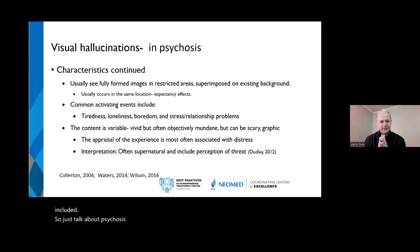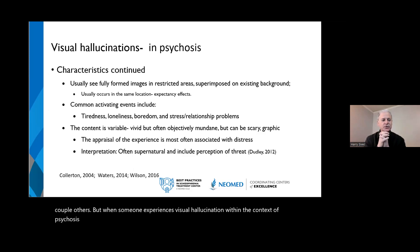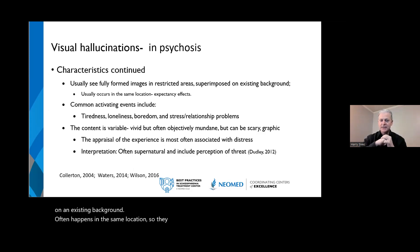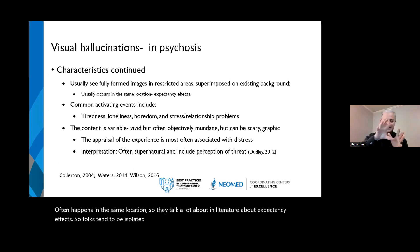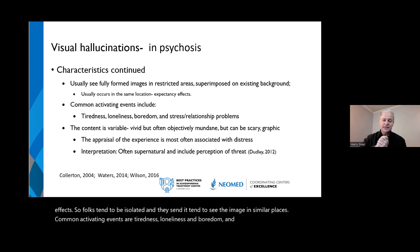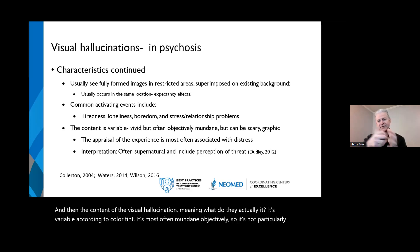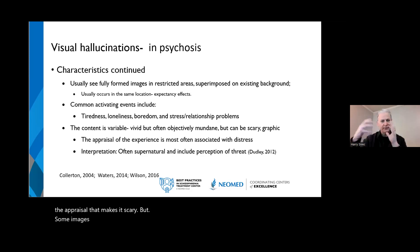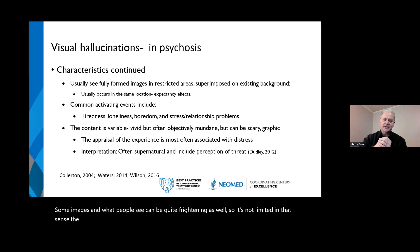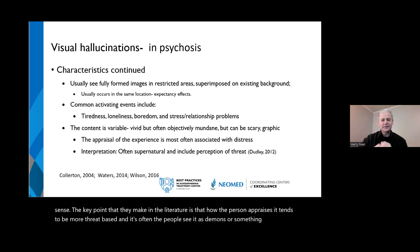In psychosis and schizophrenia specifically, visual hallucinations are usually fully formed images in a restricted area, superimposed on an existing background, often happening in the same location. Common activating events are tiredness, loneliness, boredom, and relationship stress. The content is variable — most often mundane objectively, but it's the appraisal that makes it scary. The key point is that how the person appraises it tends to be more threat-based, often perceived as demons or something supernatural.